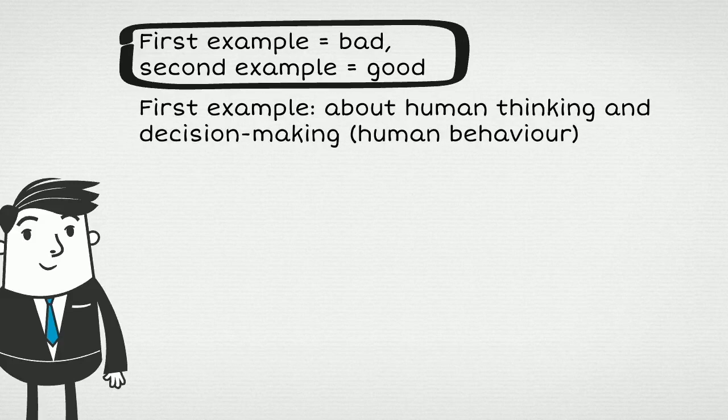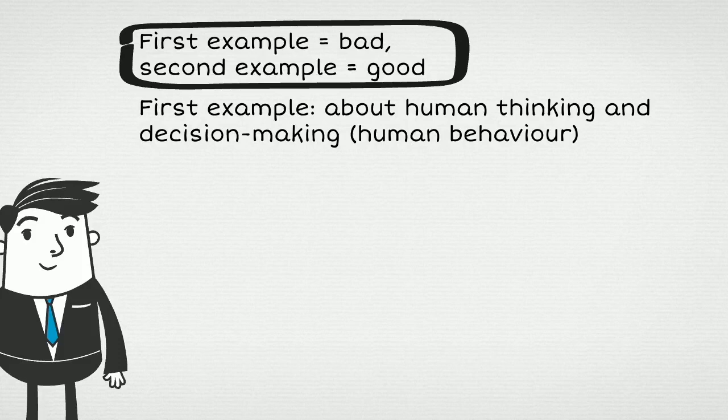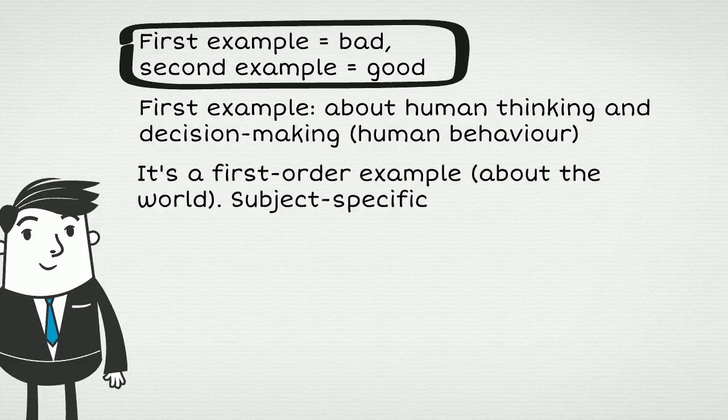The first example talks about human thinking and decision making in itself, which is human behavior. It is a first-order example, an example about the world. It is subject specific to psychology. It is not about knowledge. It would be appropriate for a psychology essay, but not a TOK essay.